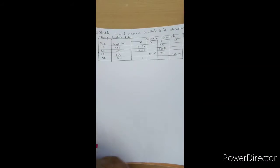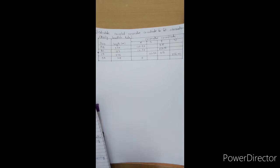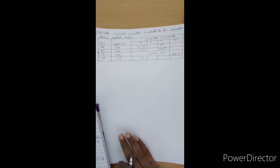Hello students, we will see the Bowditch rule. The Bowditch rule states that it is used to balance the traverse when the angular and linear measurements are equally precise. This means the Bowditch rule is used when the angular and linear measurements are equally important. Now we will see the numericals on the Bowditch rule.